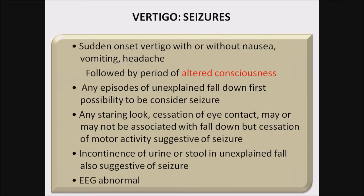Seizure: sudden onset of vertigo, with or without nausea, vomiting, or headache, followed by a period of altered consciousness. Altered consciousness is the very important feature in seizure. Any episode of unexplained fall in children should first be considered a seizure. Any staring look, loss of eye contact, with or without fall, but with suggestive motor activity, is suggestive of seizure. Incontinence of urine or stool during an unexplained fall is also suggestive of seizure. EEG is usually abnormal.